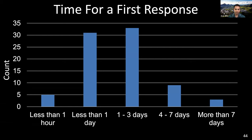Regarding time for first response: interestingly, 43% of respondents said it takes less than a day to get the first response on a code submission. This result is surprising given that conducting code review is not the primary job of research software developers, nor do they receive incentives for performing code review. Approximately 40% of respondents indicated the response time was one to three days, which seems reasonable given that research software developers have other tasks related to their own work and may not prioritize reviewing others' code as highly.